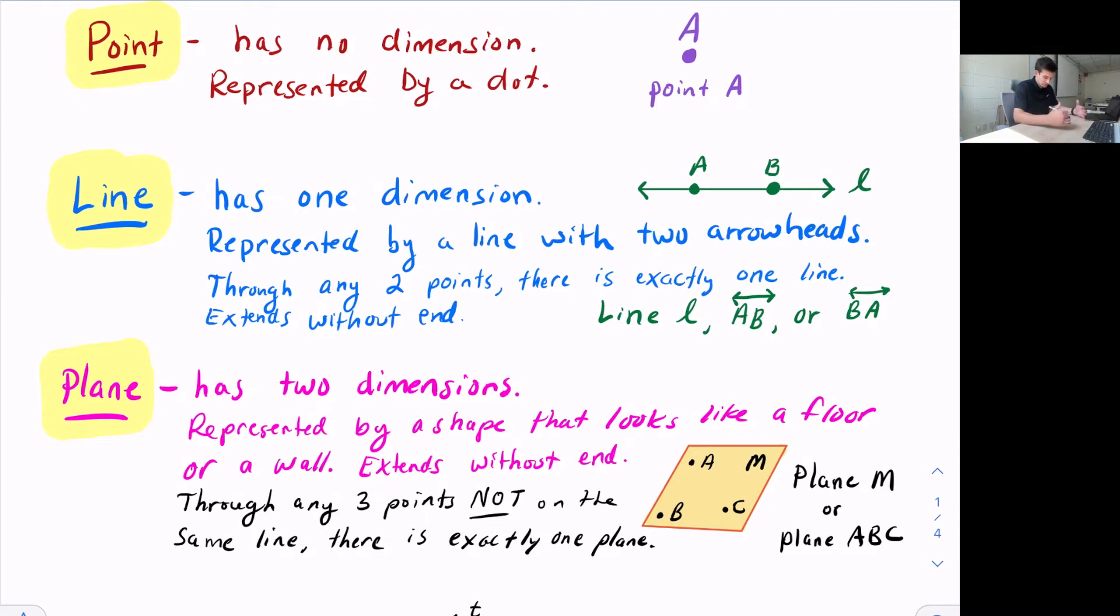A line has one dimension, so we see an example there, Line L. We could also call that Line AB or Line BA. It's represented by a line with two arrowheads, because it extends without end in both directions. And one thing to remember is, through any two points, there is exactly one line.